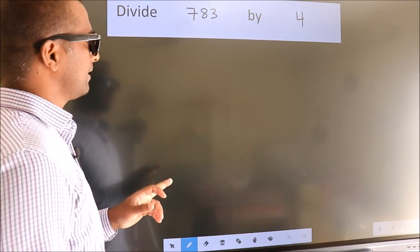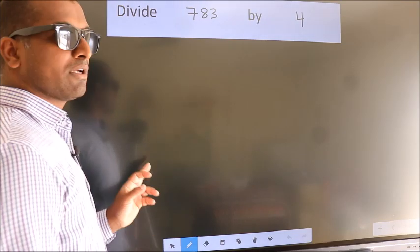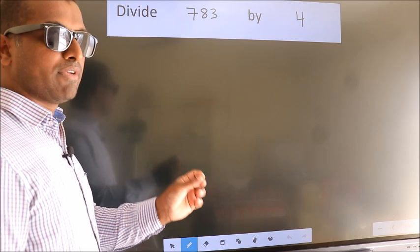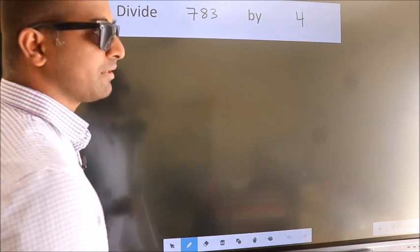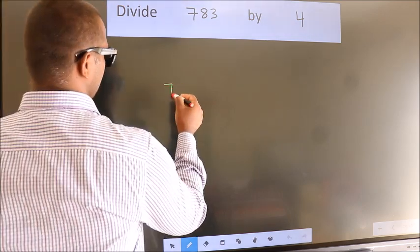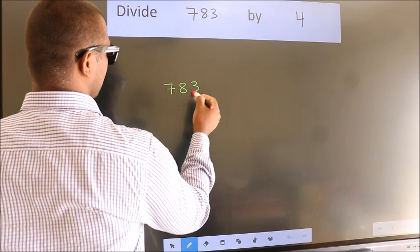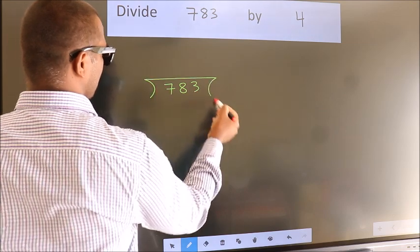Divide 783 by 4. To do this division, we should frame it in this way. 783 here, 4 here.